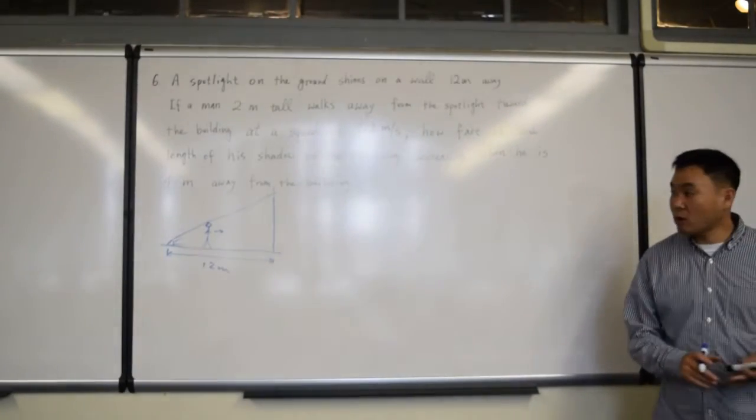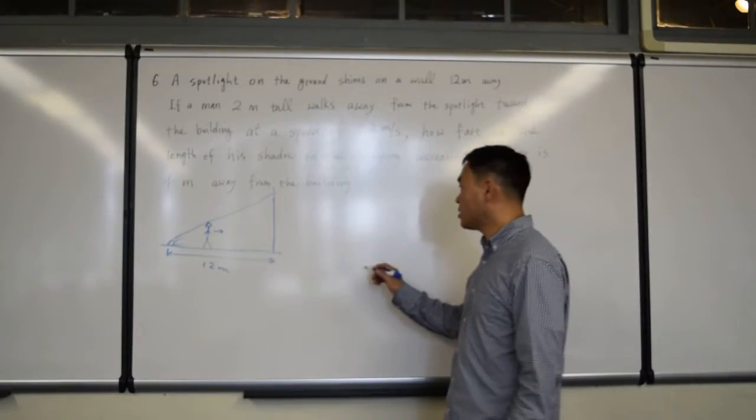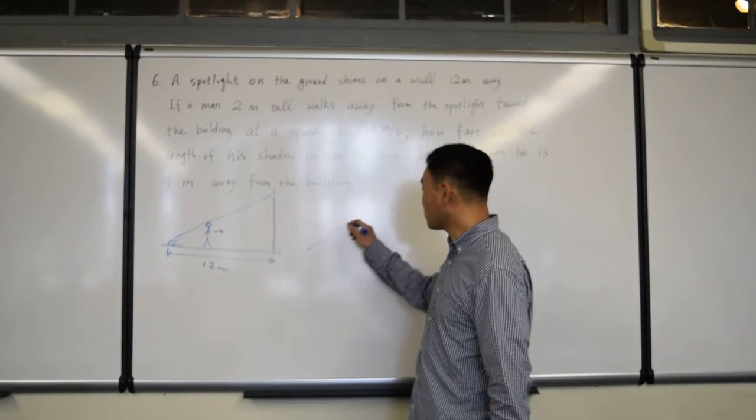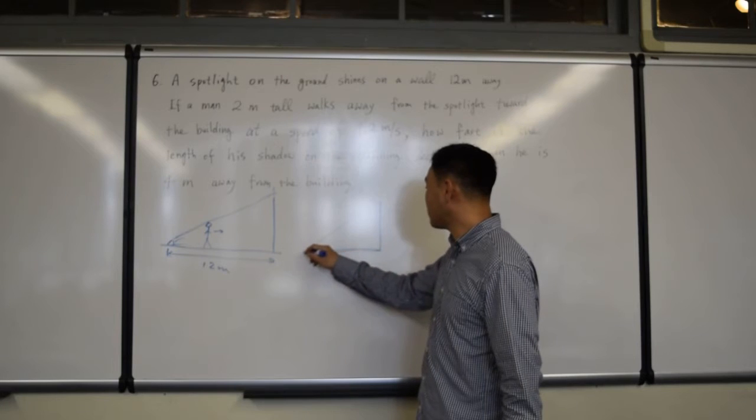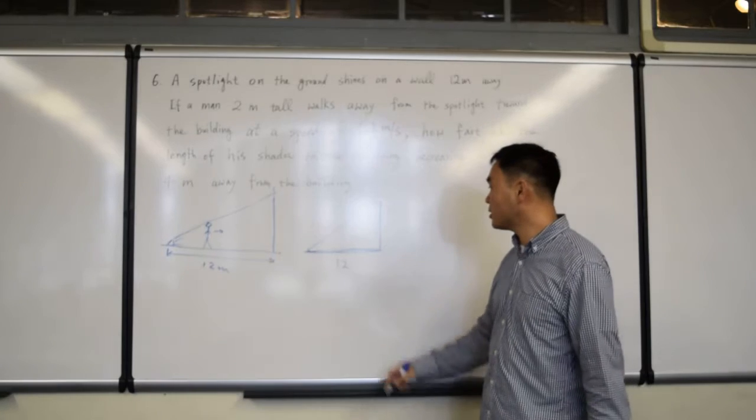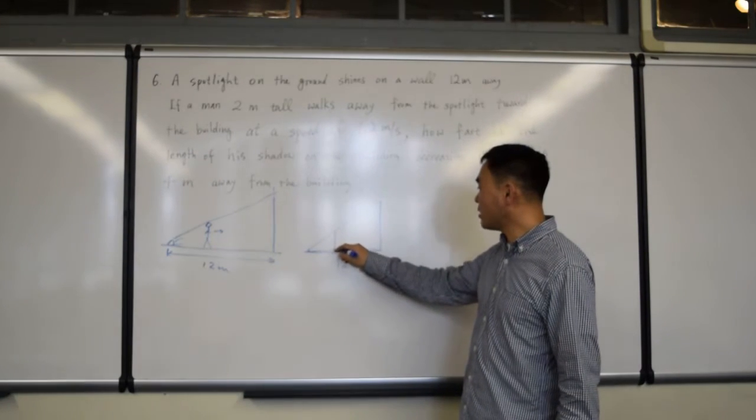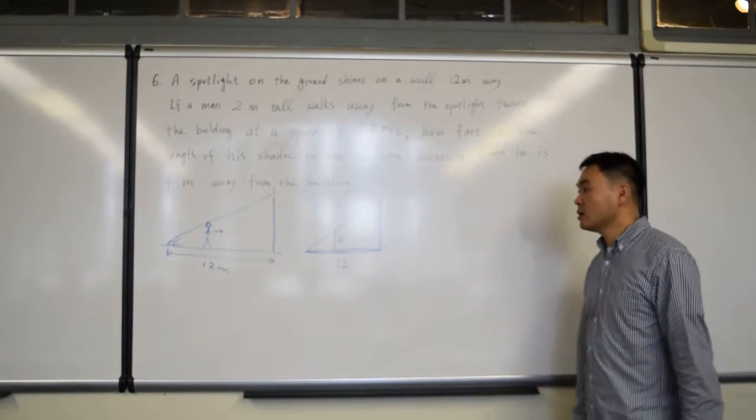Okay, we need to draw a simpler version of this in order to come up with some relations and formulas, okay? So let's just think of it this way. We have the building and the spotlight, and this is 12. And then there's this man who's 2 meters tall, okay?